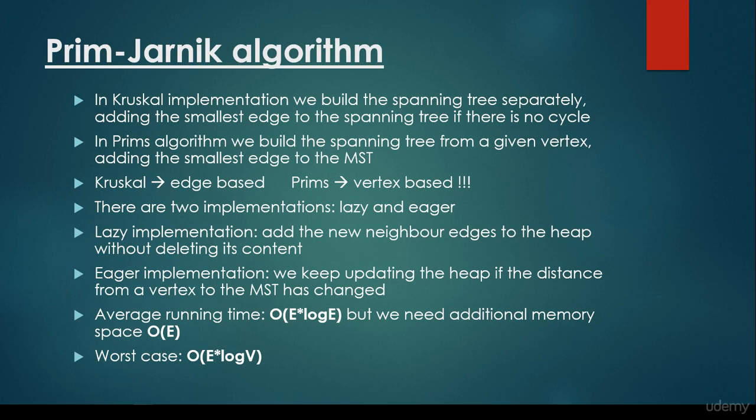We have been talking about Kruskal implementation, and in Kruskal implementation we build a spanning tree separately, adding the smallest edge to the spanning tree if there was no cycle. In Prim's algorithm on the other hand, we build a spanning tree from a given vertex and adding the smallest edge to the minimum spanning tree. It's very important to see the difference: Kruskal is an edge-based algorithm, while the Prim-Jarnik algorithm is a vertex-based algorithm.